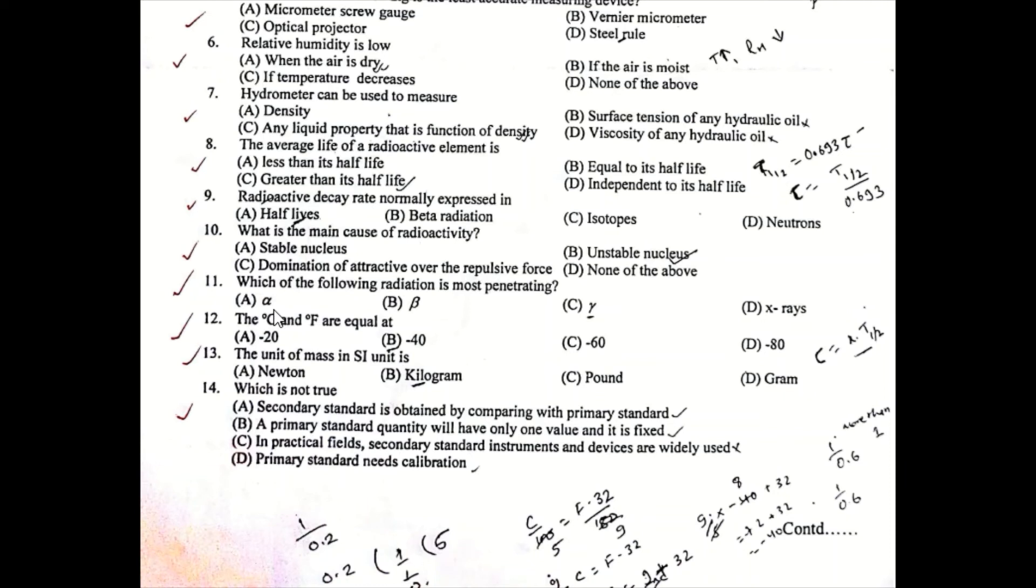Question Number 11: Which of the following radiation is most penetrating? Alpha, Beta, Gamma, or X-rays. Question Number 12: The Celsius and Fahrenheit scales are equal at minus 20, minus 40, minus 60, or minus 80 degrees. Question Number 13: The unit of mass in SI is Newton, Kilogram, Pound, or Gram.